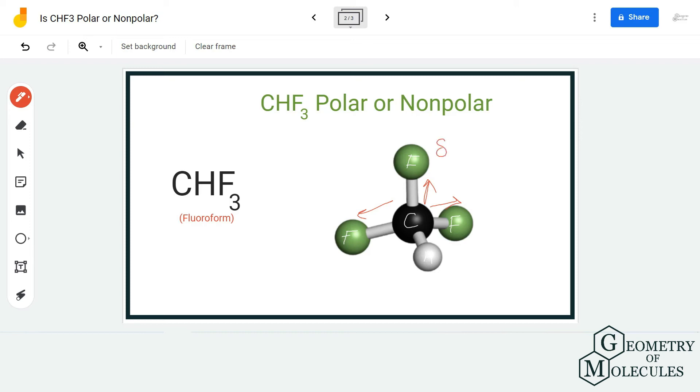The areas around fluorine atoms have partial negative charges, and the rest of the areas or regions have partial positive charges. As there is formation of poles in this molecule, CHF3 is a polar molecule.